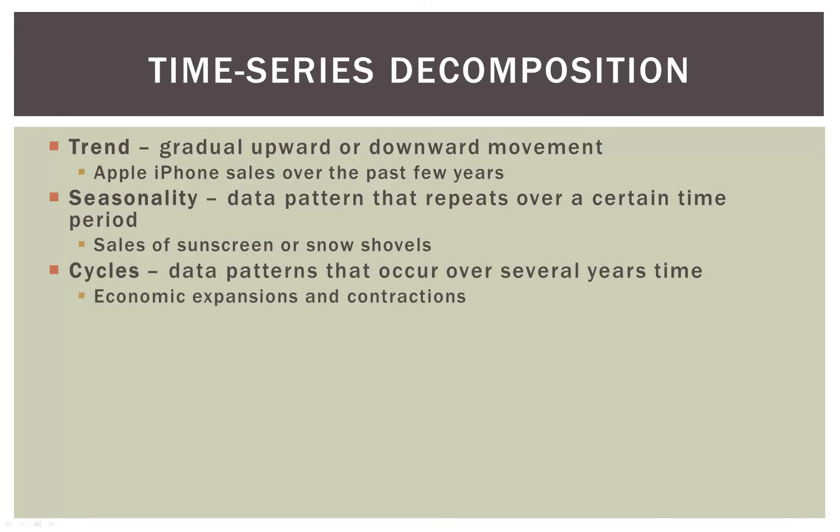Cycles. These are longer data patterns that occur over several years' time. So most advanced economies undergo expansions and contractions, kind of like traffic does on the interstate. They'll go along nice and smooth for a while, but then they'll kind of bunch up and slow down, then go faster again. Large economies tend to work in the same way, and we'll see an example of that coming up.